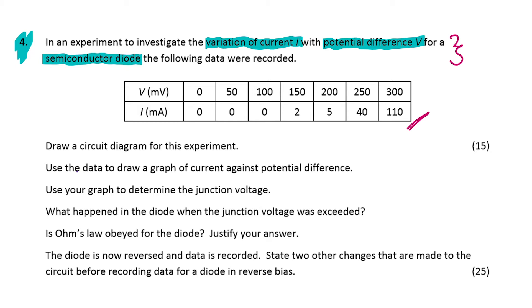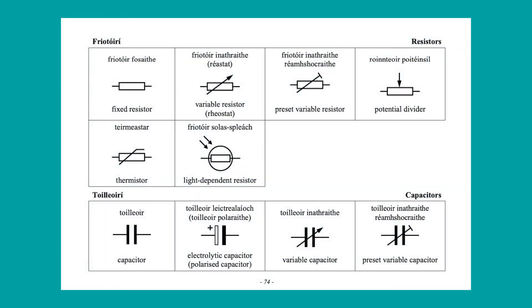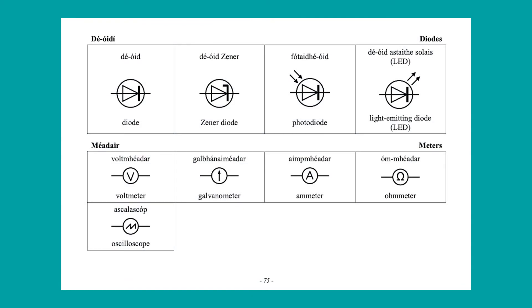Before we do, I'd like to draw your attention to page 74 of the formula and tables book when we're looking at electrical circuit symbols. You'll see all of these symbols for resistors. I want to look at page 75 as well because you'll have the circuit symbol for a diode, voltmeter, ammeter, and so forth which will really help you with your circuit diagrams. Always keep these pages in mind.